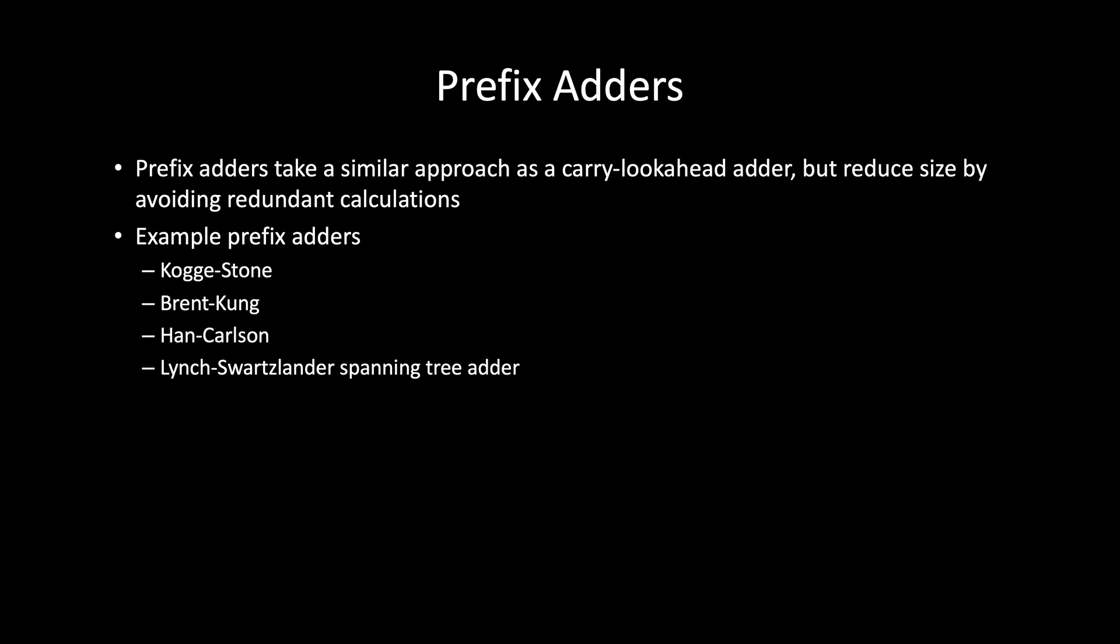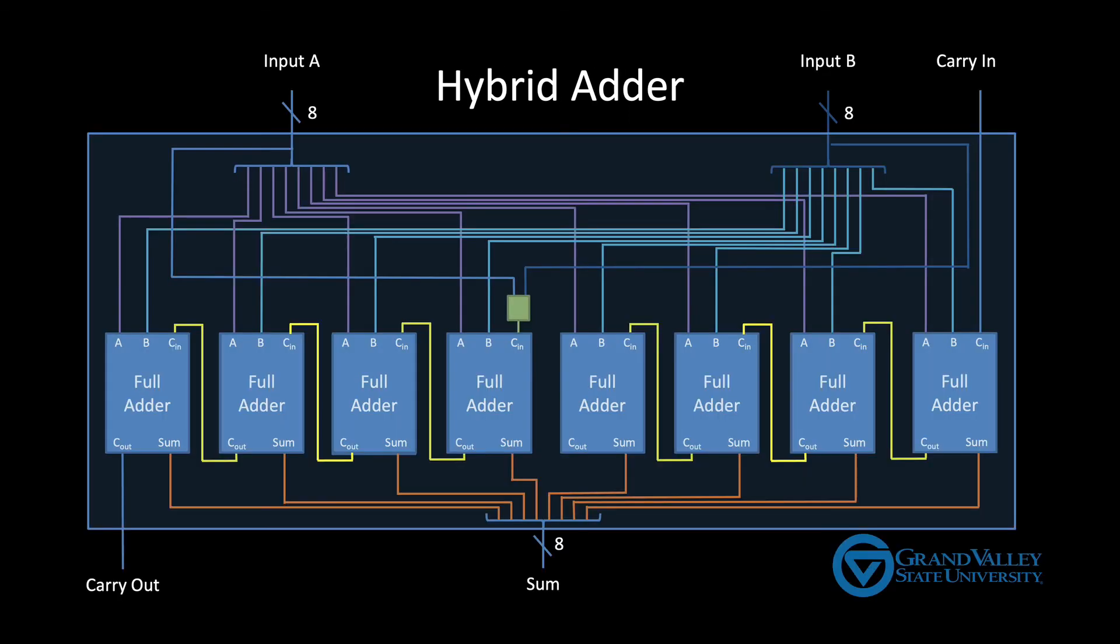Before wrapping up, I will also mention that another approach for managing the size of a carry look-ahead adder is to realize that you don't have to put a carry look-ahead sub-circuit on every full adder. For example, in this diagram here, we've only put carry look-ahead logic on the middle full adder. So this implementation will be almost twice as fast as the corresponding ripple carry adder, because the left half and the right half of this adder can run in parallel.